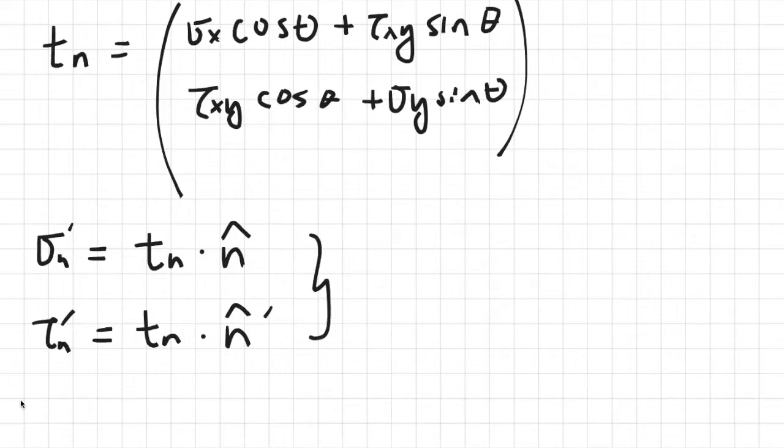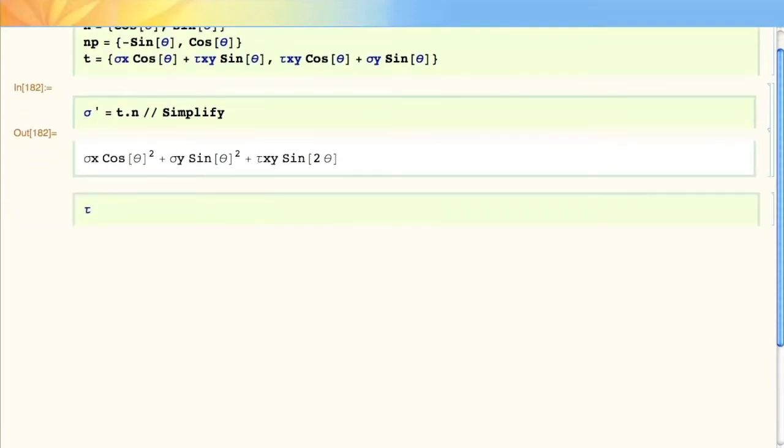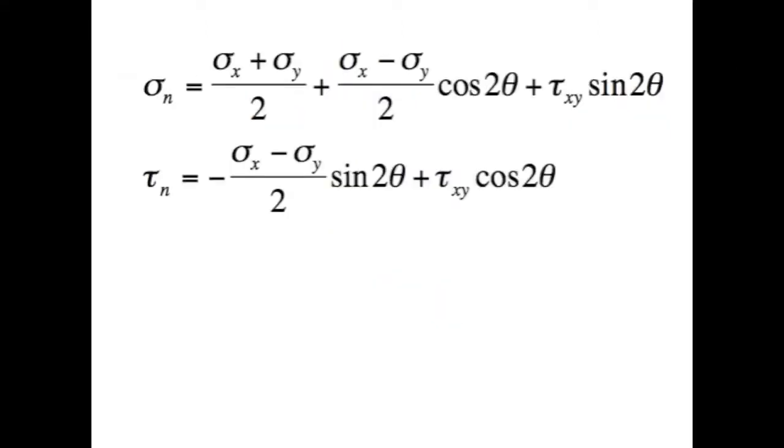And we can do these complicated calculations on Mathematica, which I will show you right now. So I've already typed in these vectors into Mathematica, and n represents the unit normal vector, and np is just n-prime, and t is the stress tensor. So we want to find the normal stress in the new coordinate system, sigma prime, and that is just dotting t with n. And we get this simplified version. So that's our sigma prime. Then we want to find our tau prime, and that is just t dotted with np. Again, we want to find the simplified version. And don't worry about the thetas and two thetas. We'll use trig identities to change them. So here's our trig identities, and we just plug them back in, and we obtain these two equations for our new stresses.